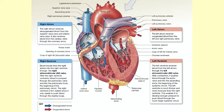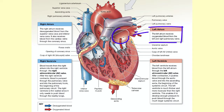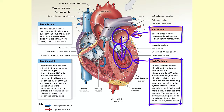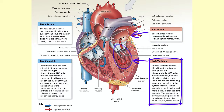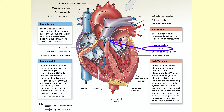Blood returns from the pulmonary circuit through the pulmonary veins, into the left atrium, and then into the left ventricle. Notice that this blood is bright red in this diagram, indicating it is oxygenated. The left ventricle contracts, closing the mitral valve and opening the aortic valve as blood travels into the aorta. Blood then travels into the systemic circuit. The aortic valve closes as blood falls back after left ventricular contraction.